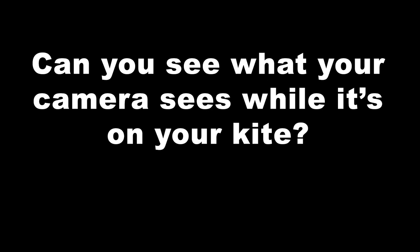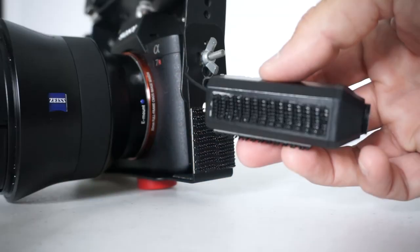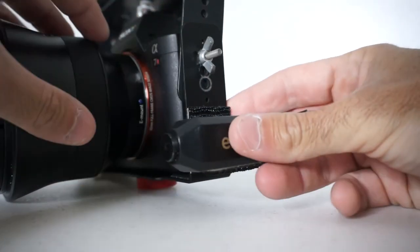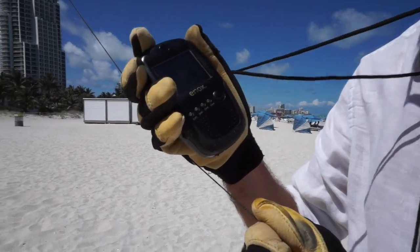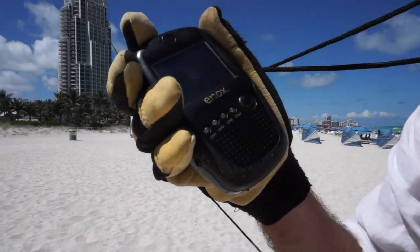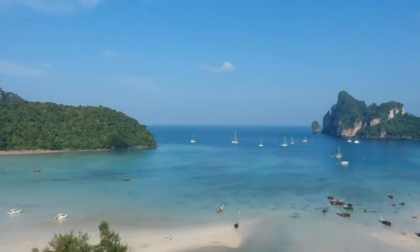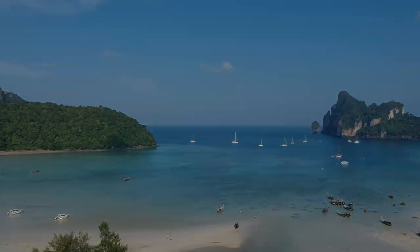Can you see what your camera sees while it's up on your kite? I get asked this question a lot and the answer is yes. The basics of how it works is I put a little wireless video camera on my camera rig and that sends a wireless video signal down to me on the ground and it allows me to view what the camera sees.